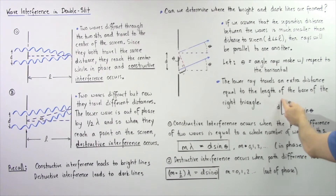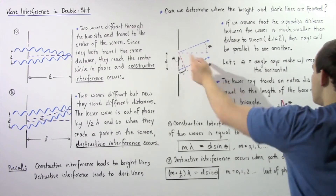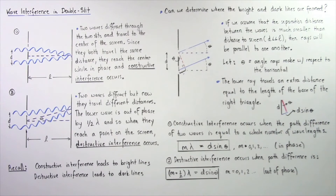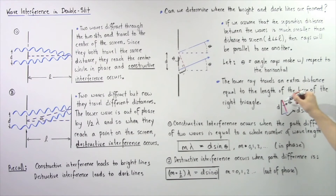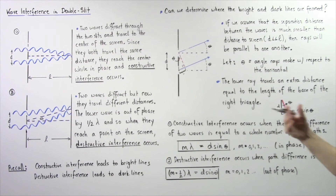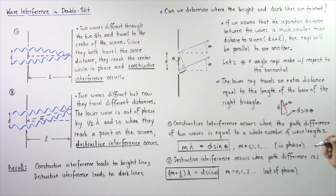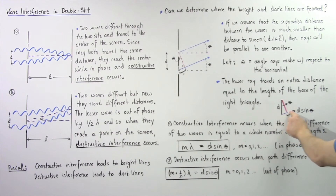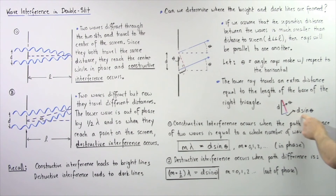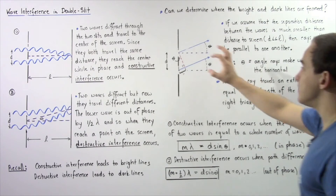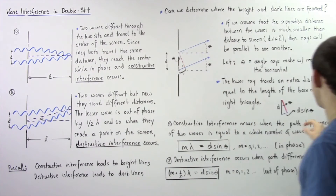Our triangle has hypotenuse d, the height of the triangle is given by the purple side, and this base is what we're looking for. We know this angle and d, so sine of theta equals the base we're looking for divided by d. Rearranging, this base length equals d multiplied by sine of theta,